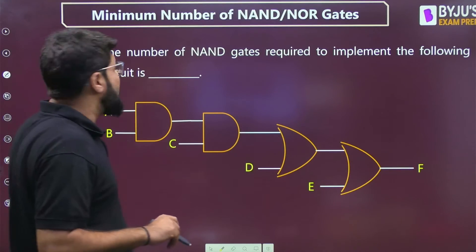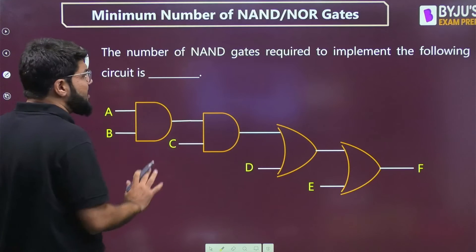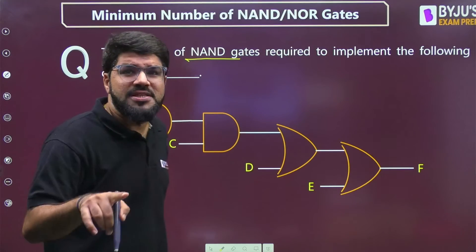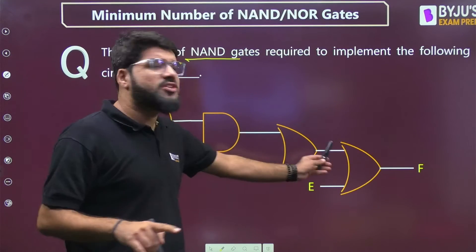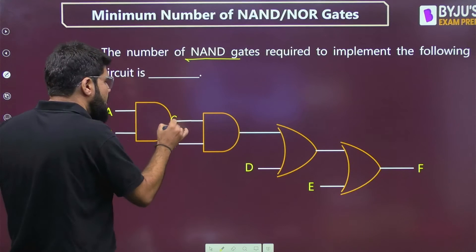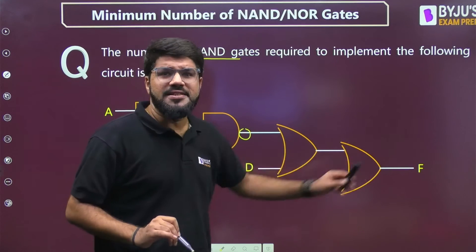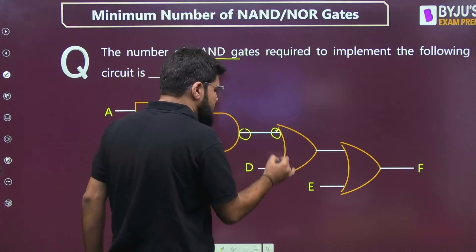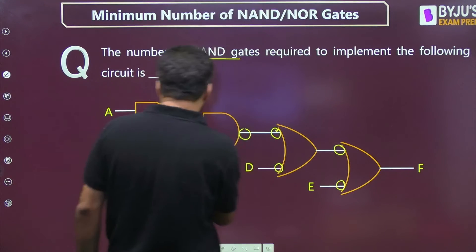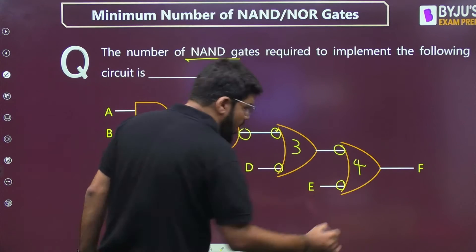The problem: find the minimum number of NAND gates required to implement the following circuit. The circuit has an AND-OR structure. To convert AND gates to NAND gates, place bubbles at the outputs. To convert OR gates to NAND gates, place bubbles at the inputs. All gates are now converted to NAND gates, giving us 1, 2, 3, 4 NAND gates so far.